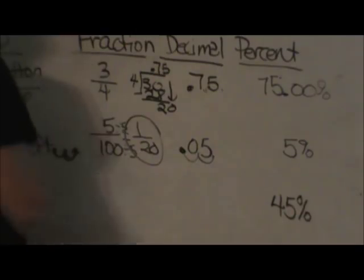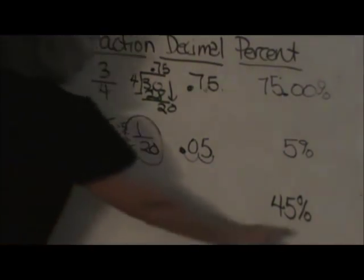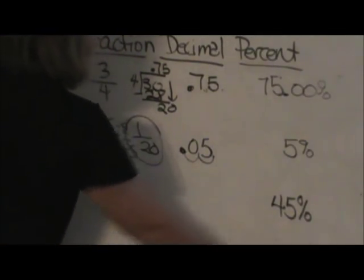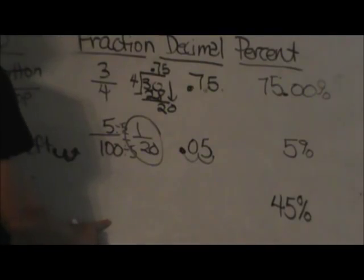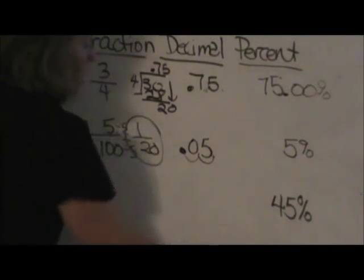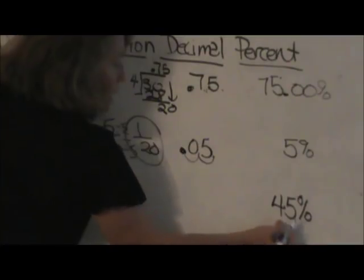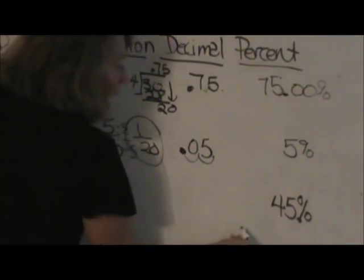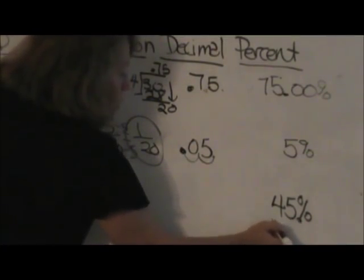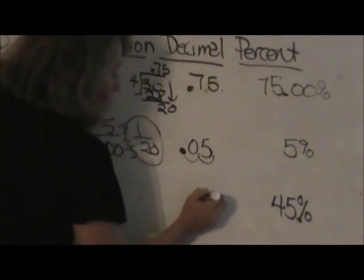Now let's do one more where we're going from percentage back to fraction. Forty-five percent. If we want to move from this column to this column, instead of moving two places to the right, I can actually move two places to the left. Since there isn't a decimal, it's behind the five, I would move it two places. So that would be point forty-five.